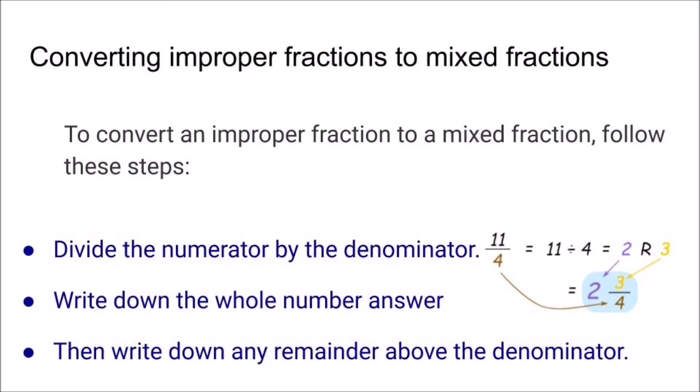Now let's see how to convert improper to mixed fractions. We need to follow three simple steps. First, we have to divide the numerator by the denominator, and then write down the quotient as the whole number answer, and then write down any remainder above the denominator.